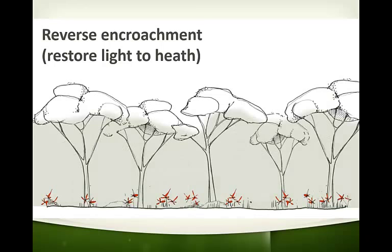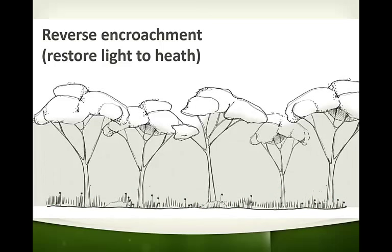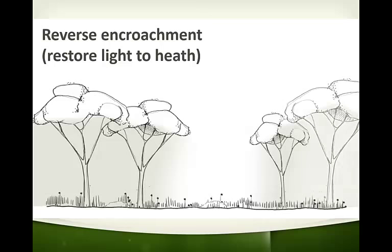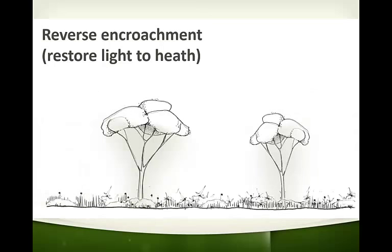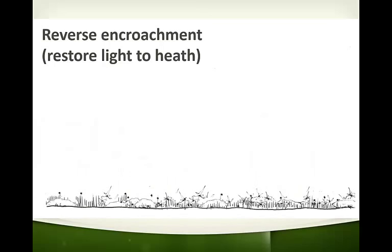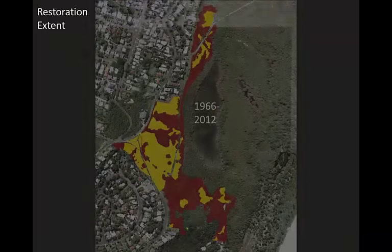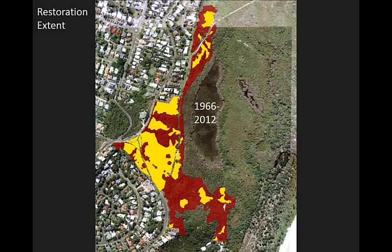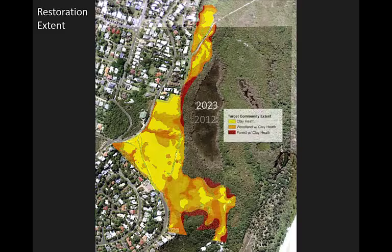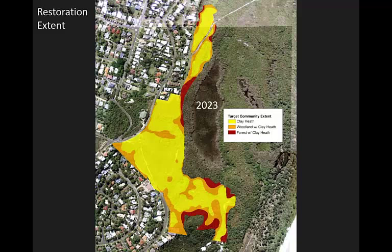The first stage is removal of rainforest trees from the mid-story and removal of weeds, and this process alone encourages a certain amount of regeneration in the understory. The next sweep is to progressively thin the canopy to specification — be it open forest, woodland, and in some areas ultimately to heathland. That increased light allows for a certain amount of regeneration of heathland plants. In terms of restoration extent: the area that was lost between 1966 and 2012, and the extent of target community — yellow being open clay heath, orange being woodland with clay heath understory, and red being forest with clay heath understory on the ecotones.